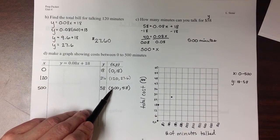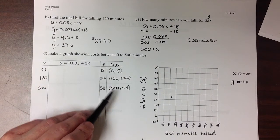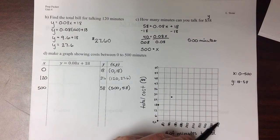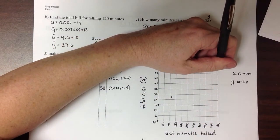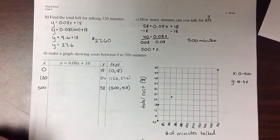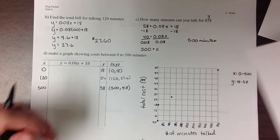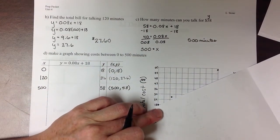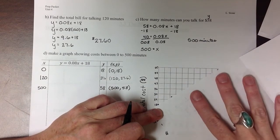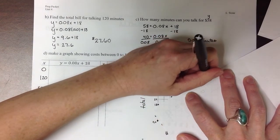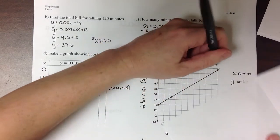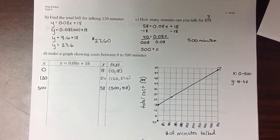And then my final point is at 500 on the x, 58 on the y. So about right there. Then connecting these dots, I'll graph the line that looks like that.